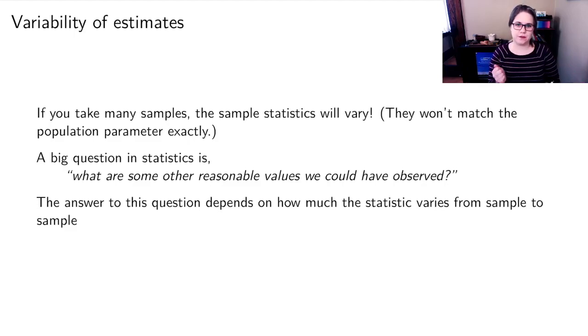So in statistics, we have two big questions. And right now, we're focusing on this one, which is, what are some other reasonable values we could have observed? We saw this particular sample statistic. But what other sample statistics could we have seen if we had just taken a different sample? And if we want to answer that question, we have to know how much the statistic is going to vary from sample to sample.